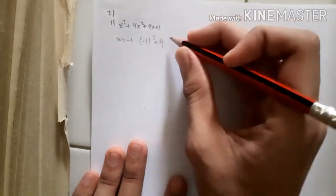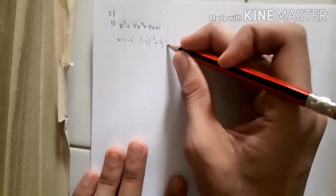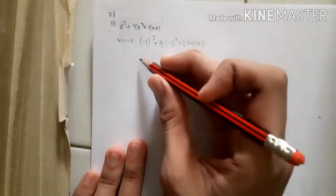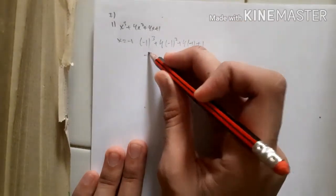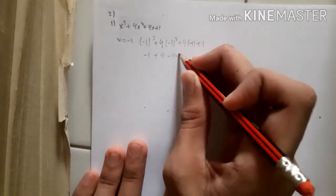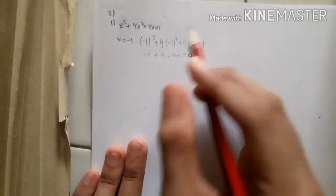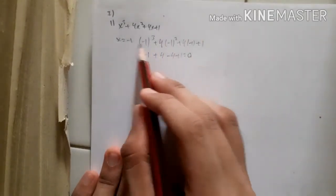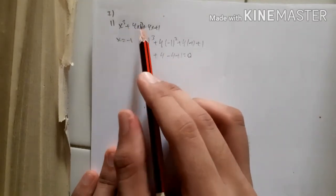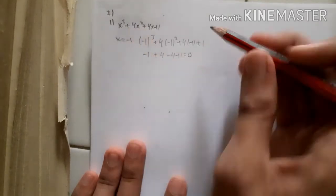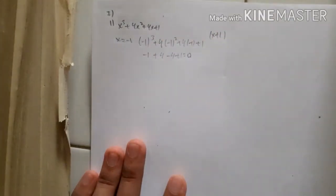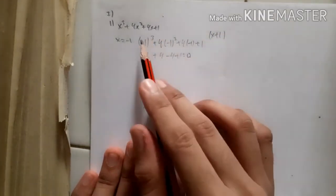That value is x = −1. When we substitute −1 into the cubic equation: (−1)³ + 4(−1)² + 4(−1) + 1 = −1 + 4 − 4 + 1 = 0. Since the result is 0, (x + 1) is one of the factors of the equation.